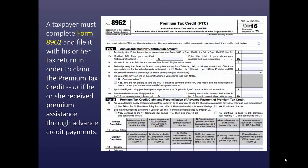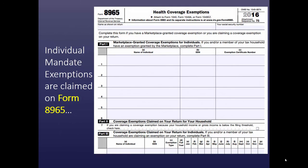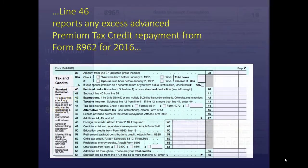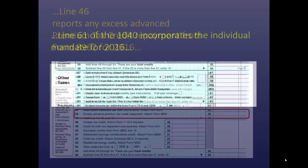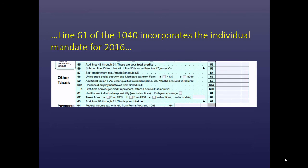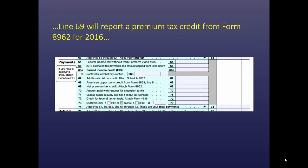A taxpayer has to complete Form 8962, the premium tax credit form, and file it with his or her tax return in order to claim the premium tax credit or if he or she received premium assistance through advanced credit payments. The individual mandate exemptions are claimed on Form 8965. As for new lines on the 1040: Line 46 reports any excess advanced premium tax credit repayment from the 8962 for 2016. Line 61 incorporates the individual mandate for 2016. Line 69 will report a premium tax credit from Form 8962 for 2016.